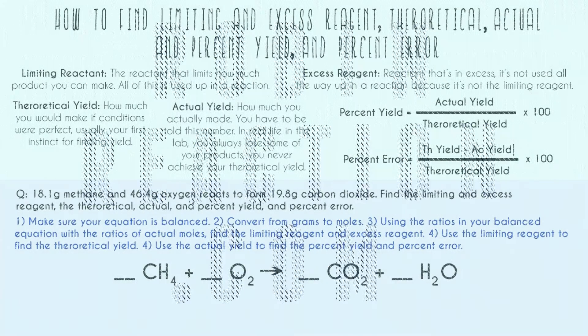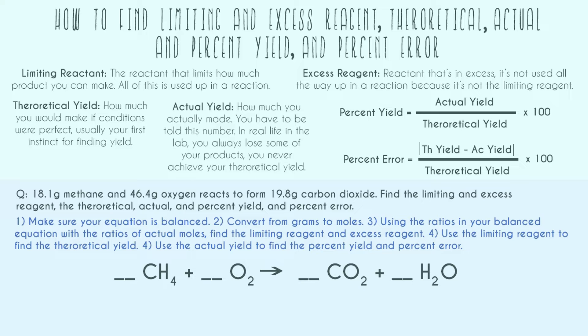Robin Reaction.com. In this video, I'm going to go over how to find limiting and excess reagents, theoretical, actual, and percent yields, and percent error. This is kind of a big stoichiometry, a little bit of everything practice problem. I have lots of other videos that go over each of these concepts individually, so if you're confused or it feels like I'm going over it too fast, check out those first. But otherwise, let's get into this one. Going ahead and reading our question, we have 18.1 grams methane and 46.4 grams oxygen, and that reacts to form 19.8 grams of carbon dioxide. Find limiting and excess reagent, the theoretical, actual, and percent yield, and the percent error.